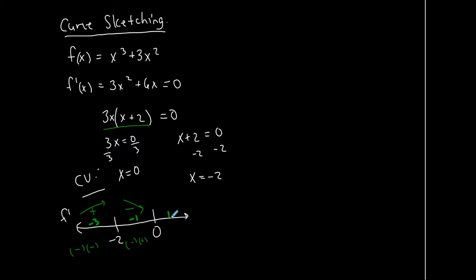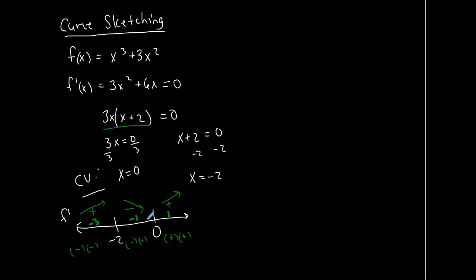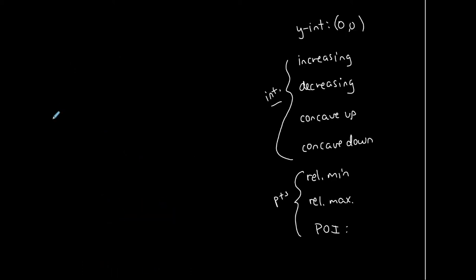Testing positive 1: plugging into 3x gives a positive outcome, and plugging into (x + 2) also gives a positive outcome. A positive times a positive gives a positive overall outcome. In this interval the first derivative is positive, and therefore the function is increasing. Note these don't always have to alternate — this is just a nice clear curve sketching example.